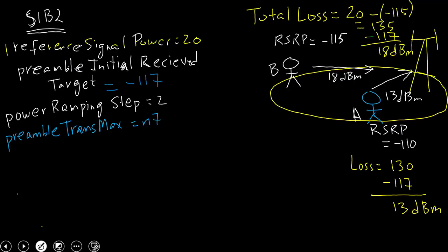This makes intuitive sense: the user standing closer to the cell transmits at a lower power (13 dBm), while the one standing farther away transmits at a higher power (18 dBm). Once they send the random access request, how would they know if eNodeB has heard them? There is a fixed time duration of four subframes, after which the UE looks on PDCCH to see if eNodeB has responded.